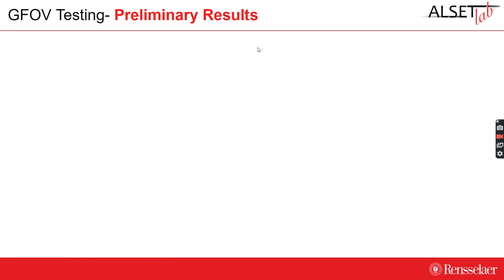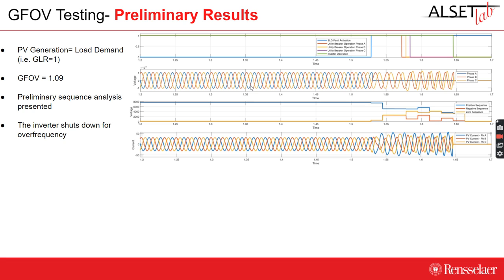Now we will show some preliminary results. We assumed that the generation of the PV was 500 kW and the load was 500 kW. When we applied the fault and after a few cycles the breaker operated, just after the breaker operation we can see that there was some overvoltage. The overvoltage was about 9 to 10 percent, which is significantly lower than the 73% of synchronous generators. To further explain this overvoltage, we did a preliminary sequence analysis. We can see that the positive sequence voltage reduces after the breaker opens, and the negative sequence and zero sequence pattern also changes. The inverter eventually shuts down for overfrequency. Our main concern is the time between the breaker operation and the inverter disconnection. For a generation-to-load ratio of 1, the overvoltage is about 9 percent.